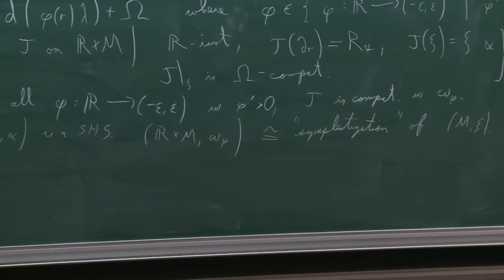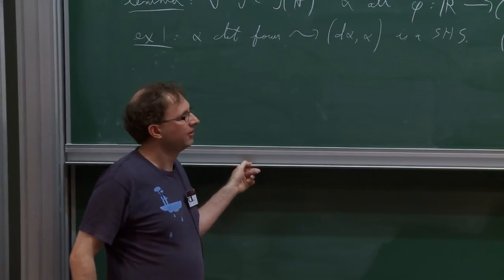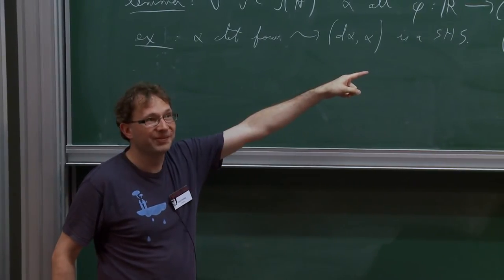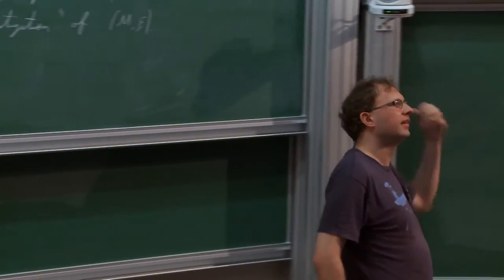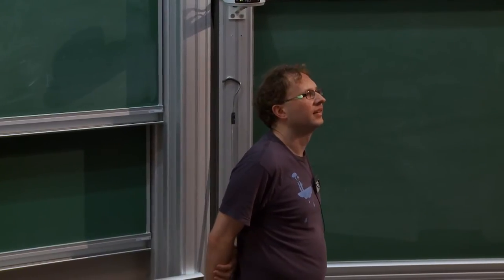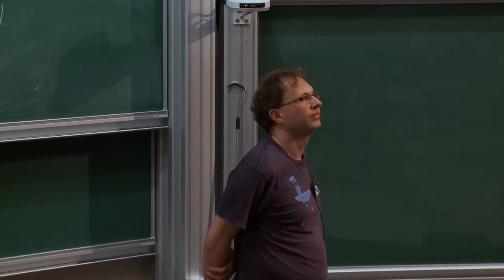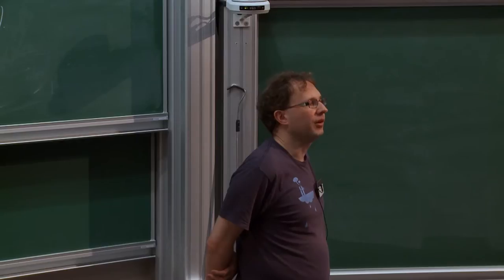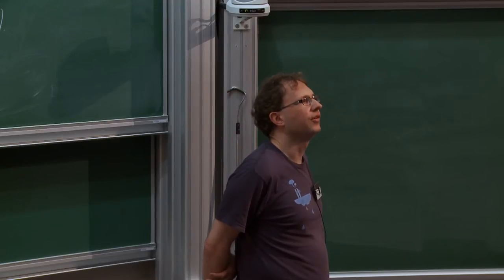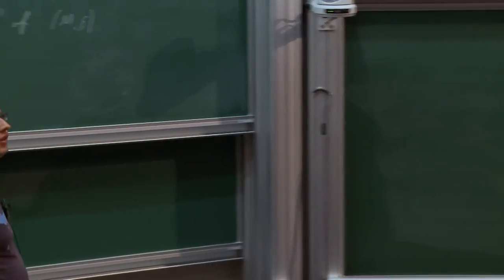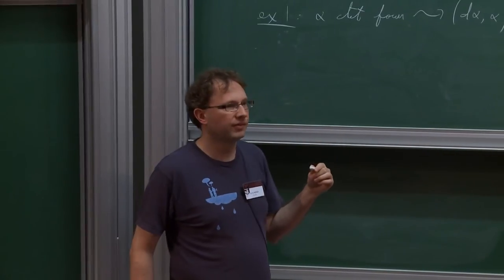So let me give two examples. First of all, if alpha is a contact form, we get a stable Hamiltonian structure (d alpha, alpha). And then this symplectic manifold R cross M with this kind of symplectic structure I've been talking about — you have to make some kind of condition on how you define phi in order to say this — but one can do it. So this is what's called the symplectization of the contact manifold. Also, for the hyperplane distribution to be integrable, I think that's equivalent to saying that d lambda vanishes on Xi. Certainly it's sufficient if d lambda vanishes altogether, which is my next example.